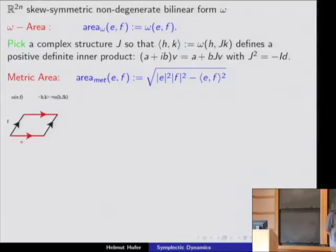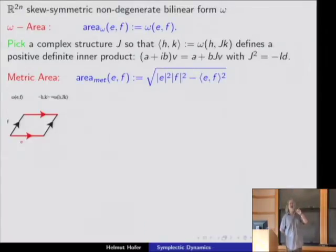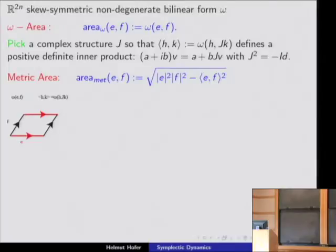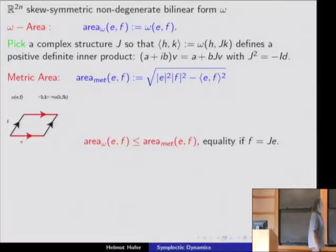If you have a signed infinitesimal area, you can talk about a metric area which is attained in the best possible situation. For all metrics obtained in the following way: in R^{2N} with a complex multiplication J (where J² = minus the identity, turning R^{2N} into a complex vector space), you can define an area associated to this metric. The relationship is always an inequality, with equality precisely when one vector is J of the other — so these two span a complex line.